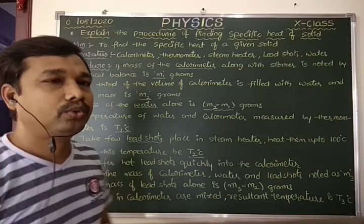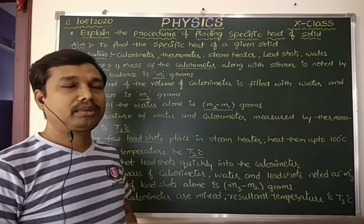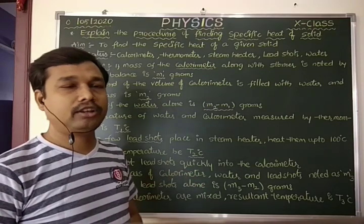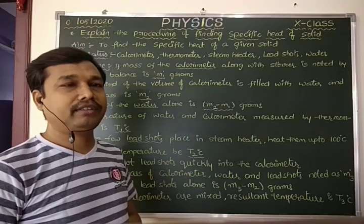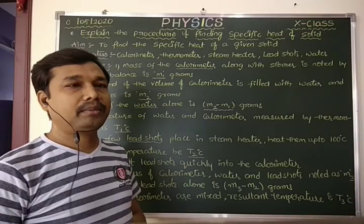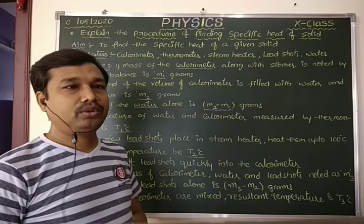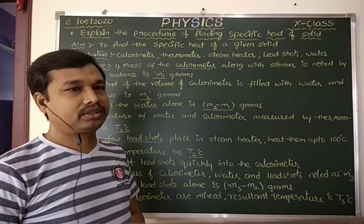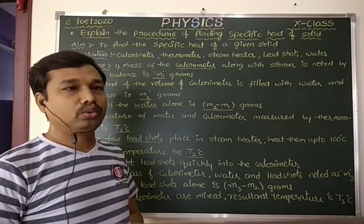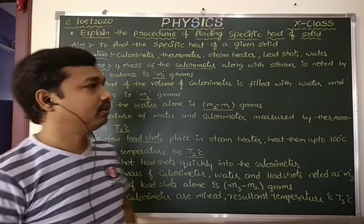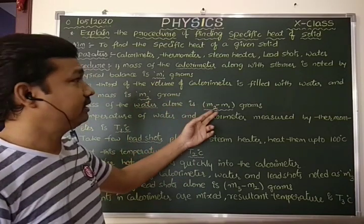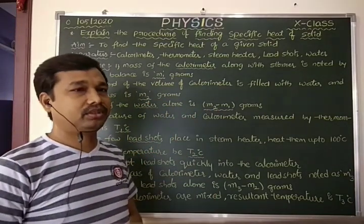We need to add water into the calorimeter — fill it one-third. Measure the combined mass and note it as M2 grams. Then the mass of the water alone is calculated as M2 minus M1 grams.